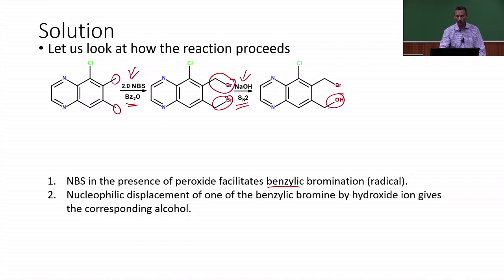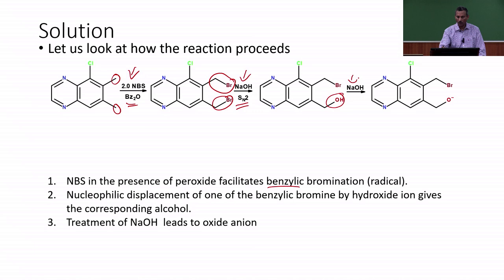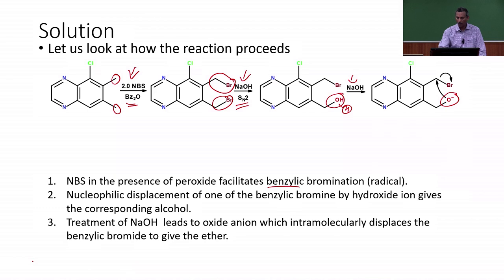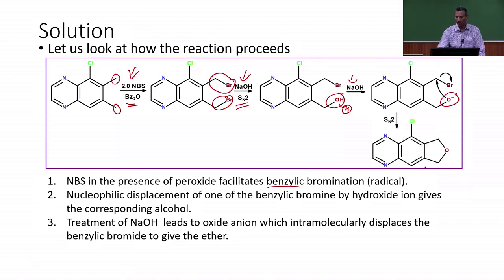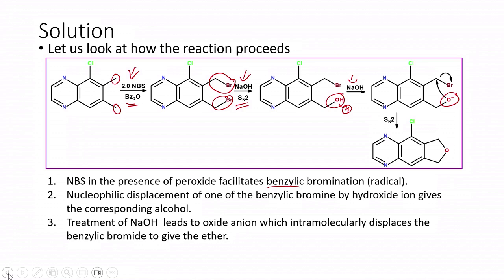Another equivalent of sodium hydroxide removes the acidic hydrogen of the benzylic alcohol, generating an oxide anion. This oxide anion intramolecularly attacks the remaining benzylic bromine, leading to a 5-membered cyclic ether. The initial step involves radical bromination of the benzylic units (the methyl positions), and the final SN2 cyclization gives the tricyclic ether derivative as the product.